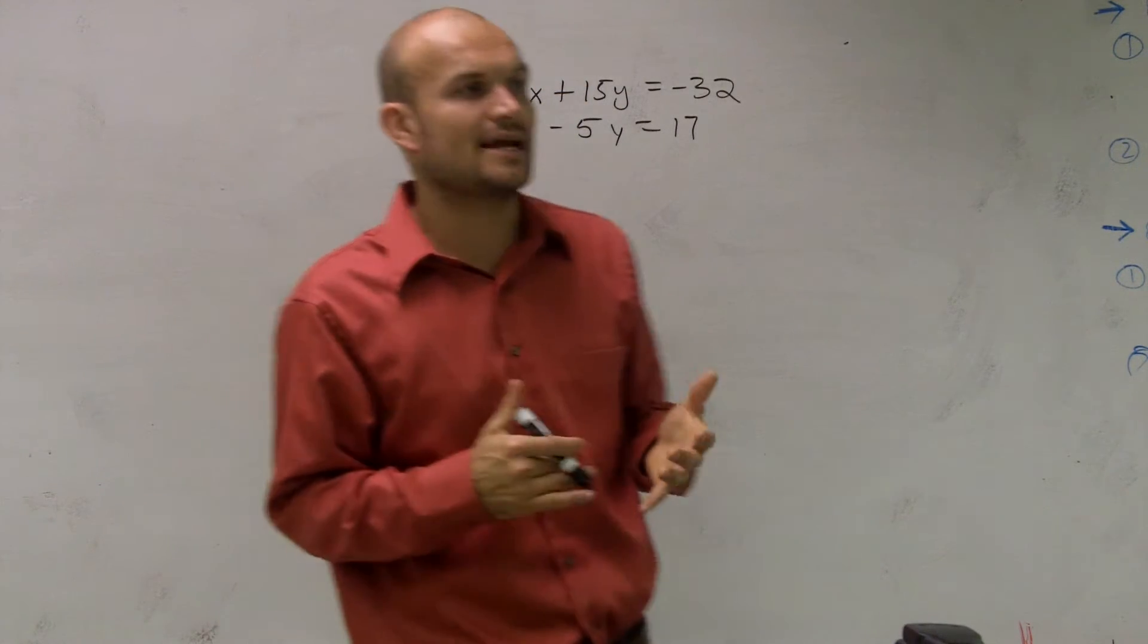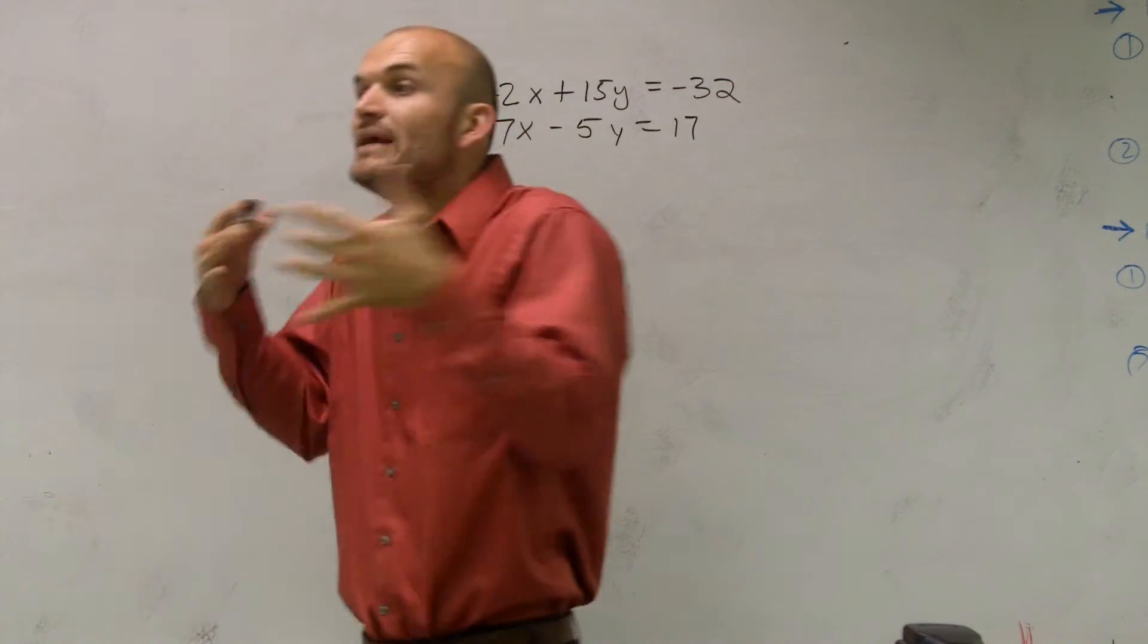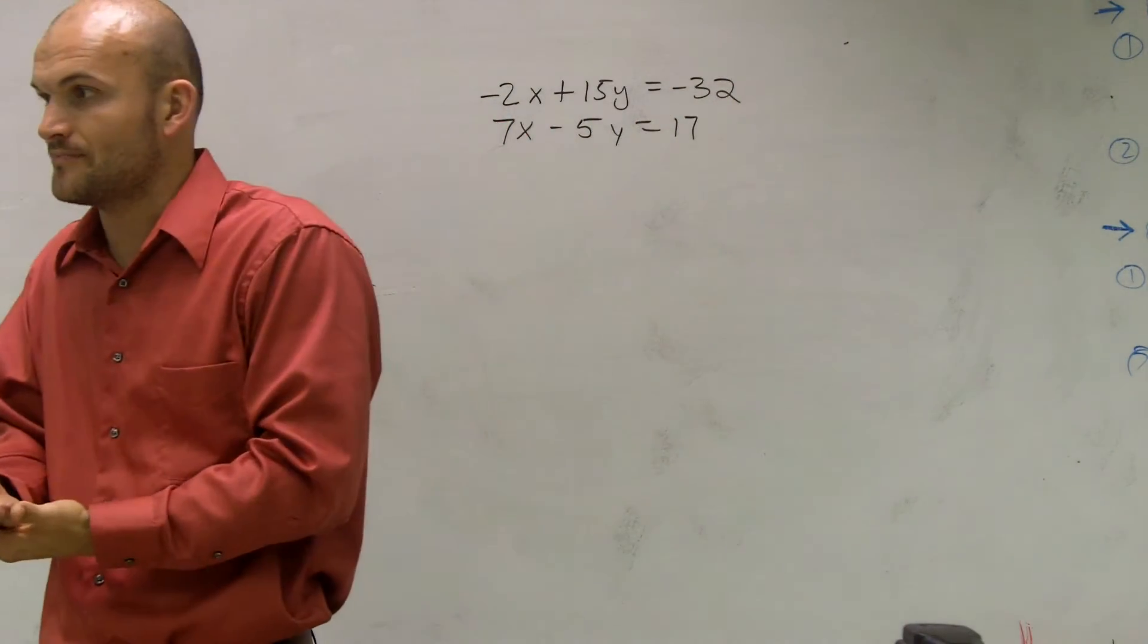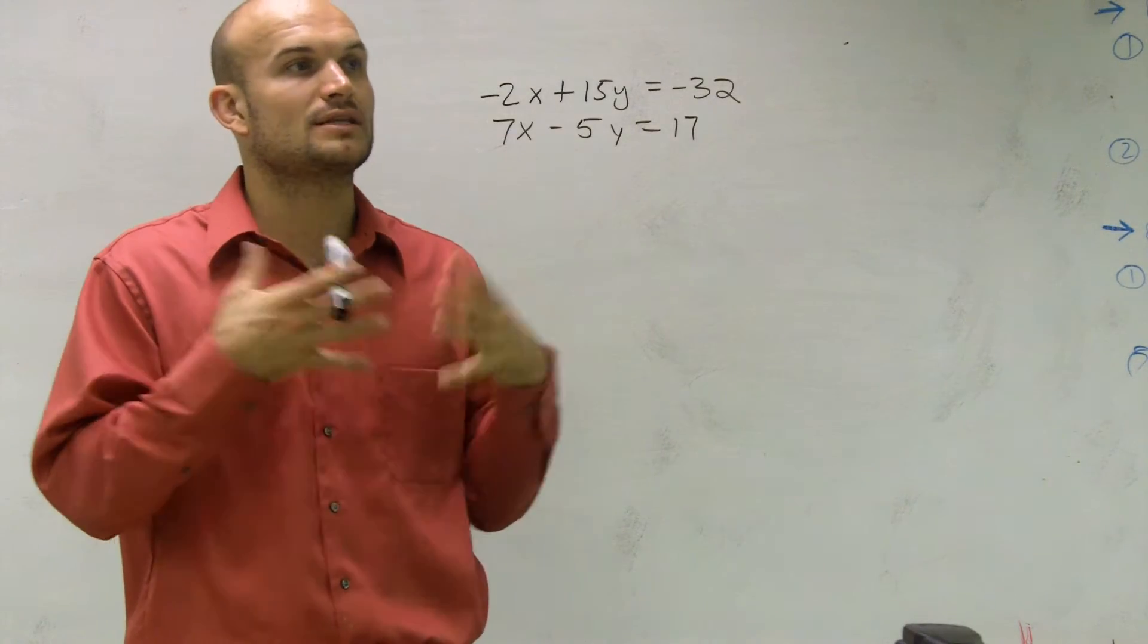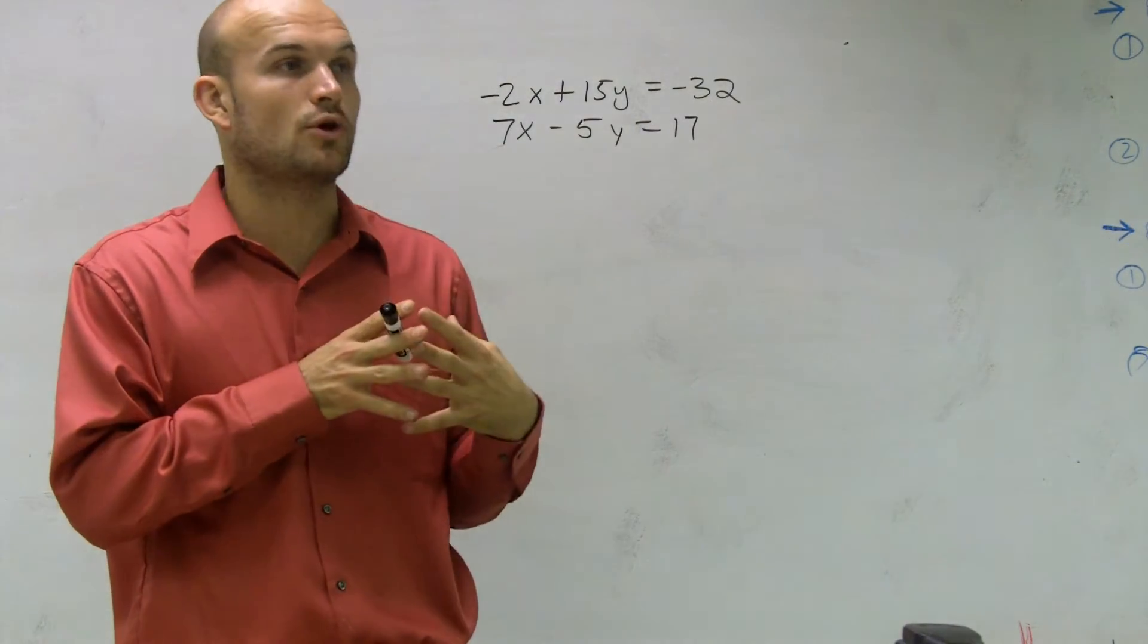So what I'm going to do, to do elimination either by addition or subtraction, we have to get the same number in front. Now, there's multiple ways you could do this. What you need to do is you need to look for the least common multiple between your two coefficients.